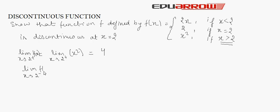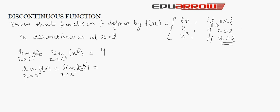Now we find the left-hand limit: the limit as x tends to 2 from the negative side of f(x), which uses the piece 2x (since x is less than 2).